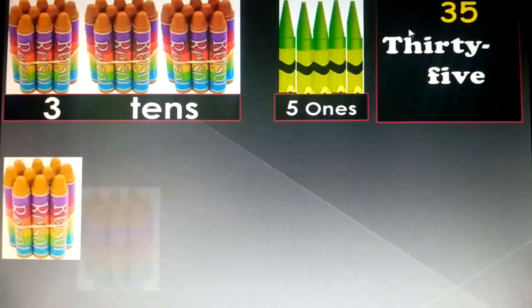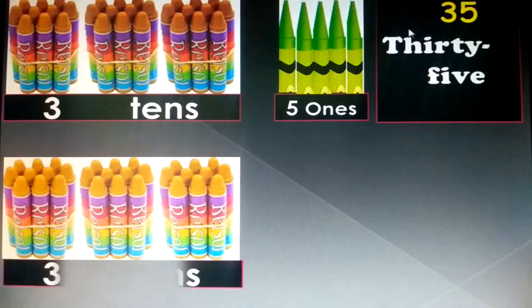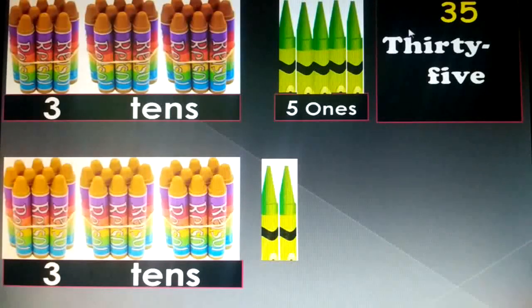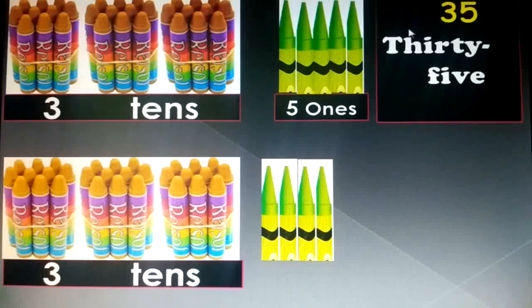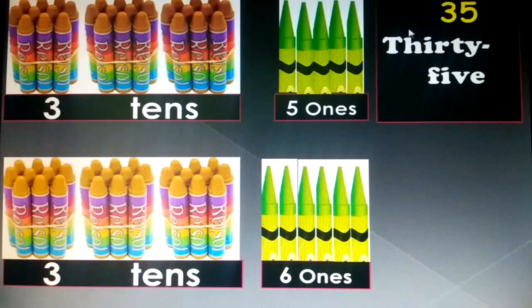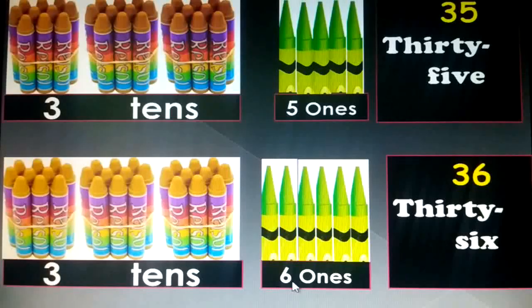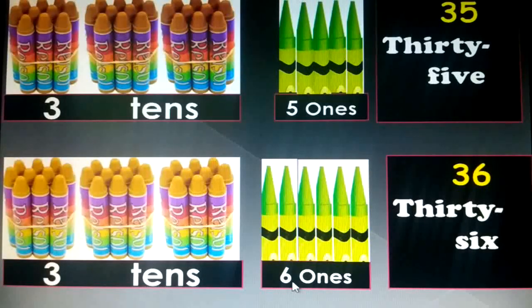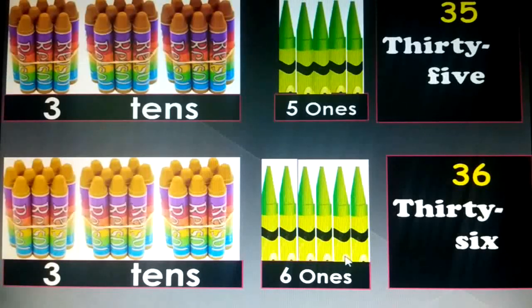1 ten, 2 tens, 3 tens, and 1, 2, 3, 4, 5, 6 — 6 ones. 3 tens and 6 ones is equal to 36. T-H-I-R-T-Y, 30, dash, S-I-X, 6. Thirty-six.